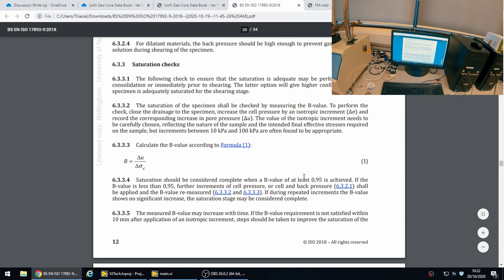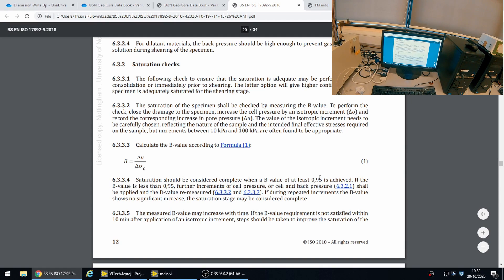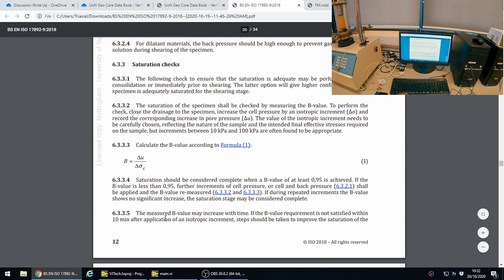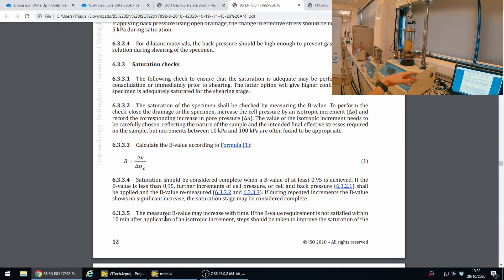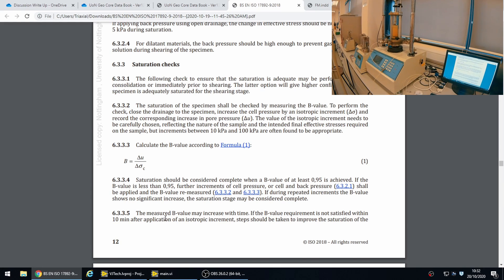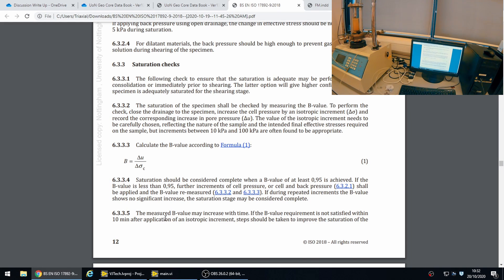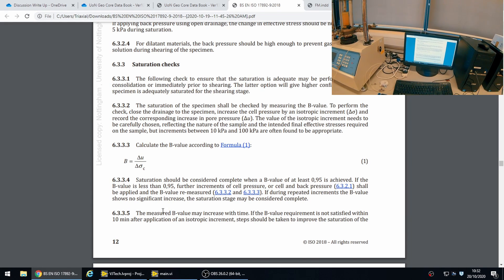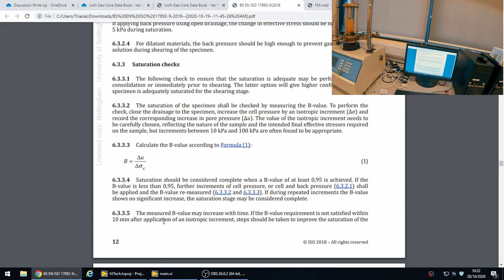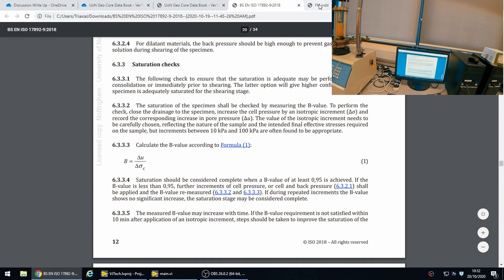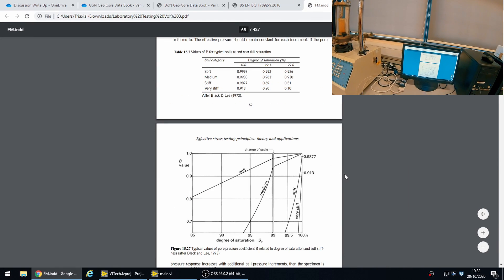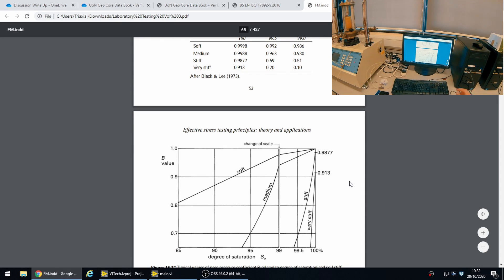It also says that saturation should be considered complete when a B value of at least 0.95 is achieved, and that the B value may increase with time as the pore pressures dissipate within our sample or catch up with the change in cell pressure. You're given in the standards 10 minutes for the application of this. If we look at another document here, this is a laboratory testing guide—I'll put a link to this in the description.